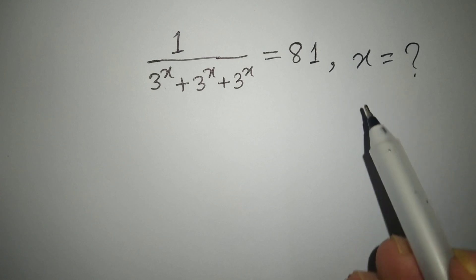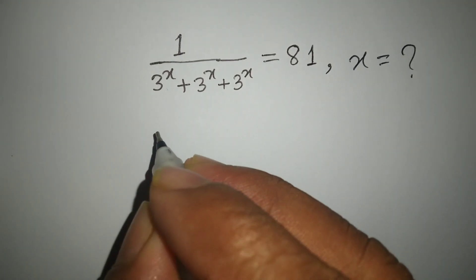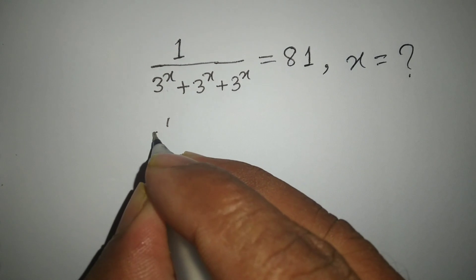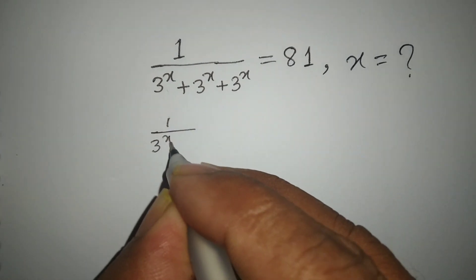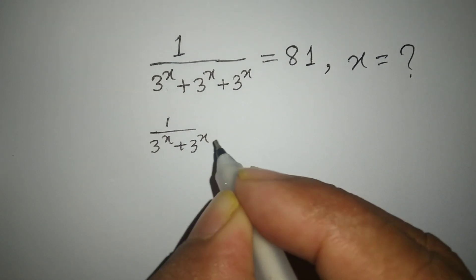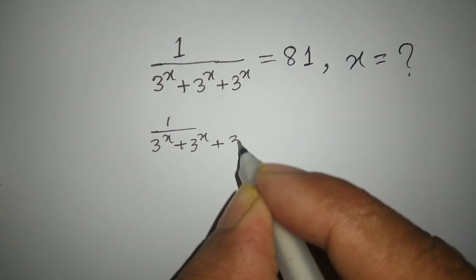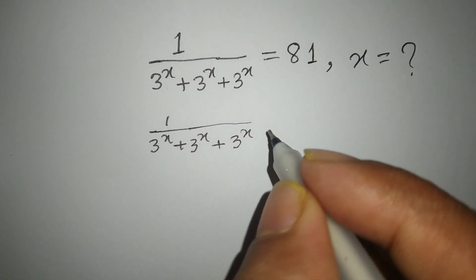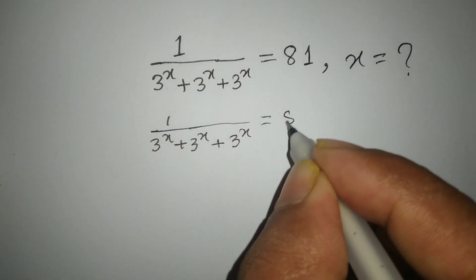So let's start. At first we can write: 1 divided by 3 to the power x, plus 3 to the power x, plus 3 to the power x, equal 81.